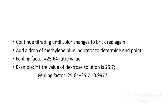Continue titrating until the color changes to brick red again. Add a drop of methylene blue indicator. If the solution remains red, that is the end point of the titration. It is important to know that for accurate results, you have to be keen on your measurements. The time taken to do the titration should not take more than four minutes, and you must do more than two titrations. After your first titration, measure another 5 ml of Fehling solution A and 5 ml of Fehling solution B, put in another conical flask, and do the second titration. After getting the first and second titration results, calculate the average titer value.